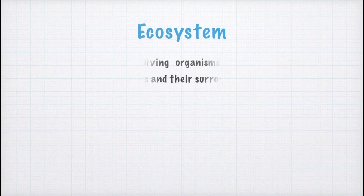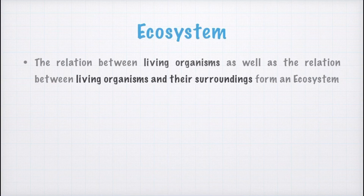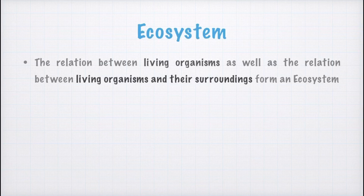Now we will study about ecosystem. Ecosystem is the relation between living organisms and their surroundings. The relation between living organisms means the relation between humans and animals, between plants and animals, and so on. For example, humans depend on plants and plants depend on humans. And the relation between living organisms and their surroundings — for example, monsoon crops, also known as Kharif crops or rice crops, only grow in humid and hot conditions, meaning they depend on humidity and high temperature.